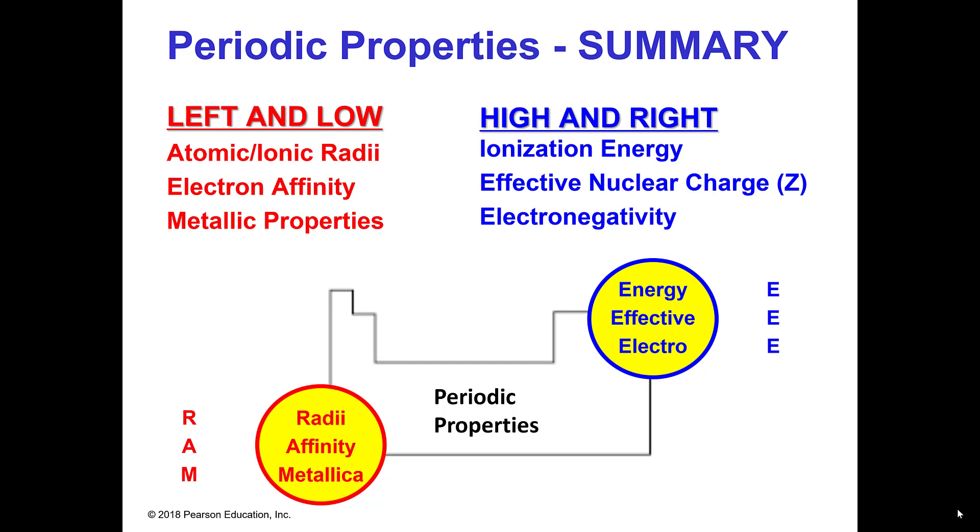So I've come up with six of the most common properties that we look at and it sprang out at me that they had one of two qualifications. The highest value of those was either left and low on the periodic table or it was high and right on the periodic table. And it ended up that there were three left and lows and three high and rights.